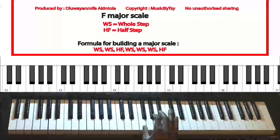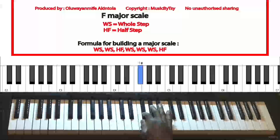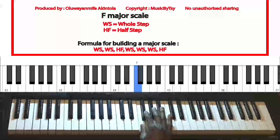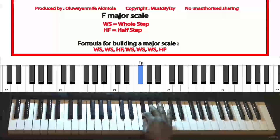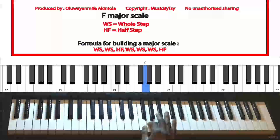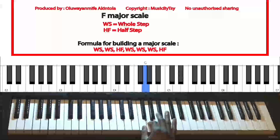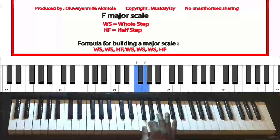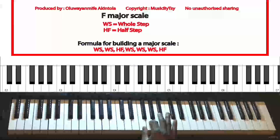Just to remind you: when you move from one key to the next key without skipping any key, that is known as moving by a half step. For example, if I move from the key of F to the key of F sharp, that means I've moved by a half step. When you move from one key to another key and you skip a key in between — for example if I move from the key of F to the key of G, I've skipped the key of F sharp — therefore that means I've moved by a whole step.